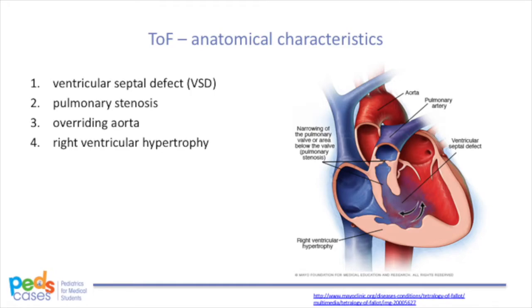Next, we should explore why and how these anatomical features occur. Normally, the ventricles are divided by a muscular septum that develops up from the floor of the ventricles and a membranous septum that develops down from the tissue that divides the outflow tract into the aorta and the pulmonary trunk. These two join together to form the ventricular septum. In Tetralogy of Fallot, the outflow tract is divided unequally such that the aorta is much larger than the pulmonary tract, leading to features of an overriding aorta and pulmonary stenosis. This shifts the membranous septum so it does not align properly with the muscular septum, creating a ventricular septal defect.